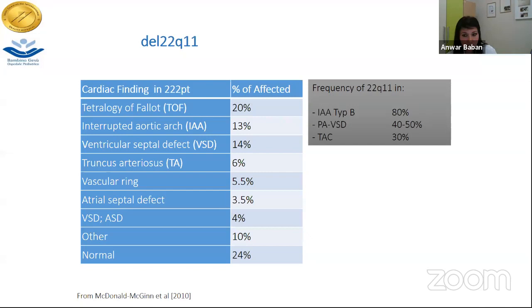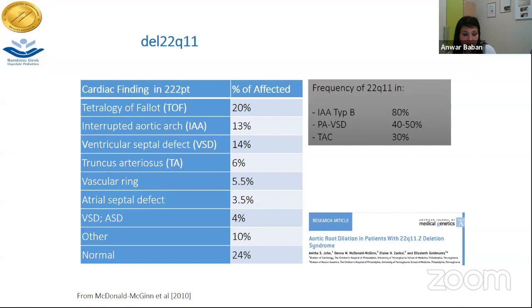Another emerging aspect is the progressive nature of certain defects, such as aortic root dilatation in patients with microdeletion 22q11.